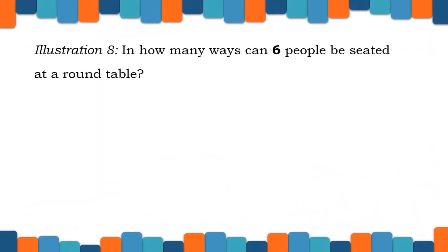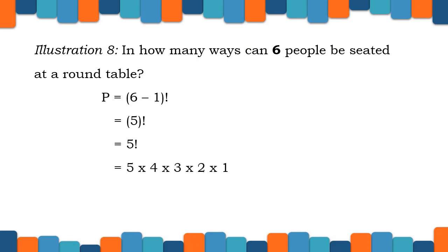Let us have illustration 8. In how many ways can 6 people be seated at a round table? We have P equals (6 minus 1) factorial, which is 5 factorial. Expanding 5 factorial: 5 times 4 times 3 times 2 times 1, and our final answer will be 120 ways.